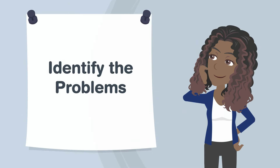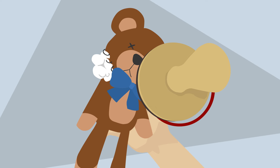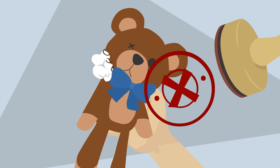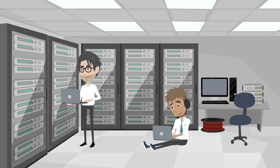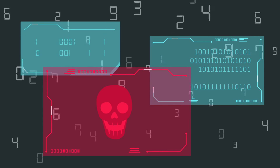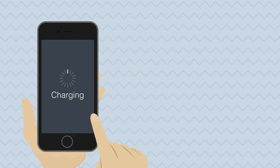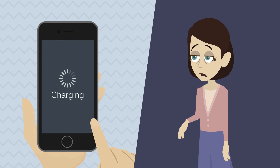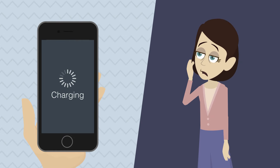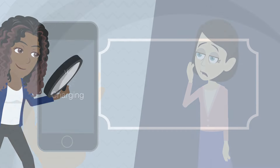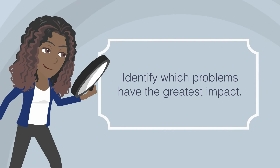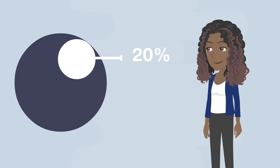Identify the problems. Some problems can have a big impact. For example, in a software development company, 20% of the identified bugs could be responsible for 80% of the malfunctions encountered by users. Identify which problems have the greatest impact in order to focus your resources on correcting them.